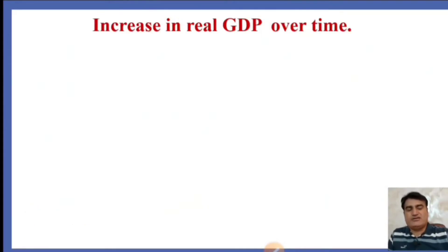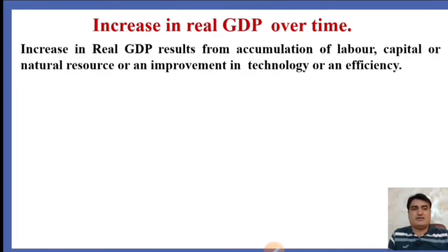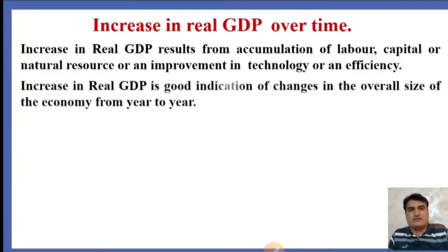The first method is an increase in real GDP over time. We have discussed in detail nominal GDP and real GDP. When total output is measured at current year price, it is nominal GDP. When total output is measured at base year price, it is real GDP. Real GDP is also known as inflation-adjusted GDP. Increase in real GDP results from accumulation of labor, capital or natural resources, or an improvement in technology or efficiency.